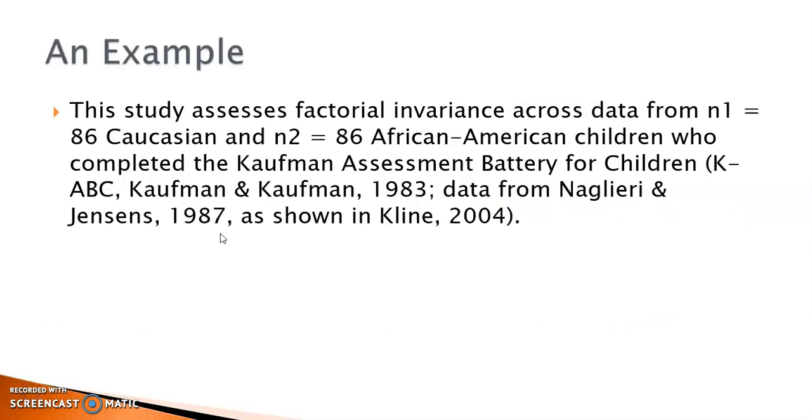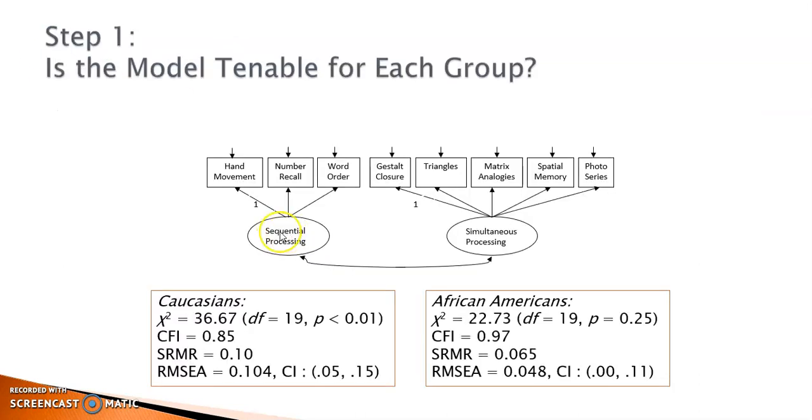The example I am going to use is based on a study by Naglery and Janssen published in 1987. In this study, they assessed the factorial invariance between Caucasian and African American children using data collected via the Kaufman Assessment Battery for children. In the CFA model, there are two latent factors measured by eight variables.